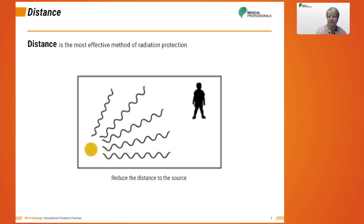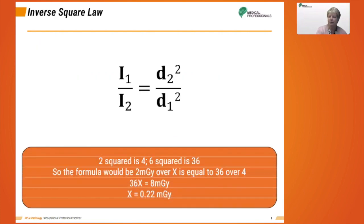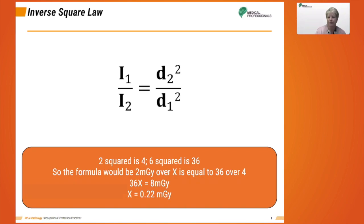Referring back to time: if the time in the room is cut by a factor of two, the radiation exposure is cut by a factor of two, because they are directly proportional. If the distance is increased by a factor of two, the radiation exposure is cut by a factor of four, meaning the reduction in dose is twice that of the reduction with time. Here is the inverse square law formula: Intensity₁ / Intensity₂ = Distance₂² / Distance₁². Intensity is the same as exposure, which determines radiation absorbed dose given in milligray. We can substitute milligray into this formula by replacing intensity.